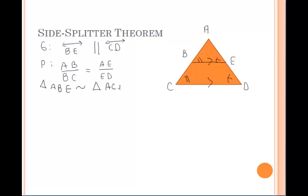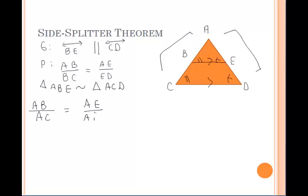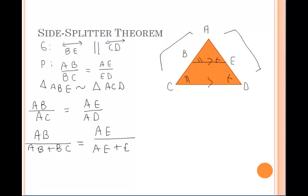We can say that triangle ABE is similar to triangle ACD. Then we can set up a proportion: the length of side AB to the length of side AC is equivalent to the length of side AE to the length of side AD. But AC is a combination of segments AB and BC, so we write AB plus BC. And AD combines segments AE and ED, so we write AE plus ED.